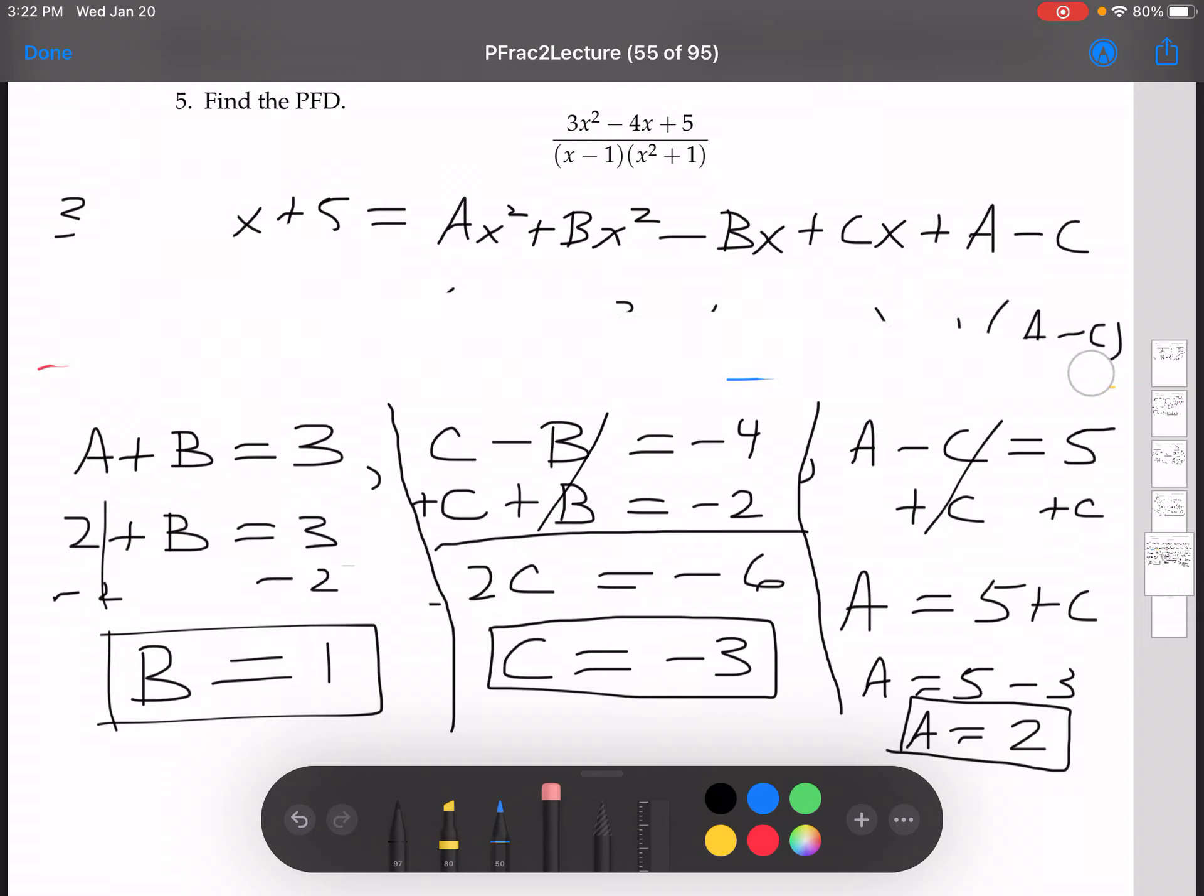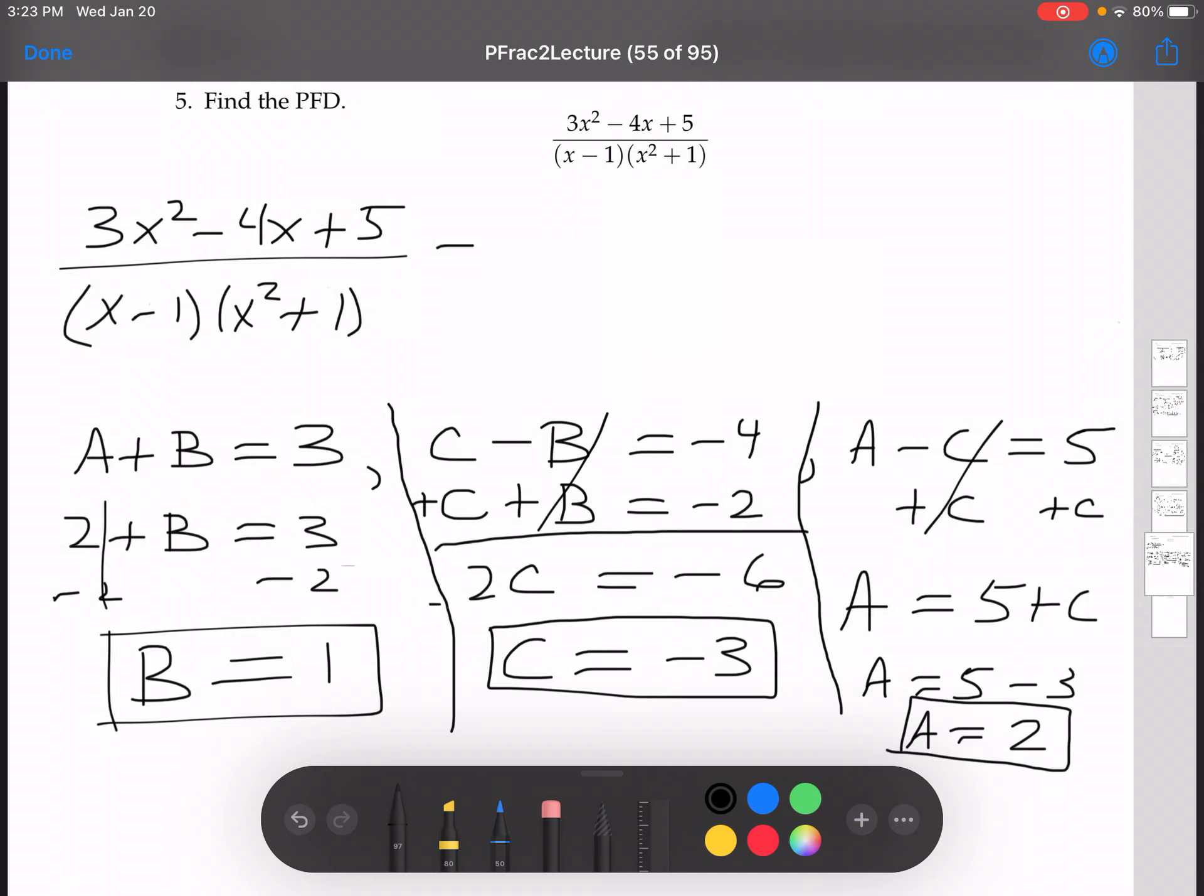And so now I've found that 3x squared minus 4x plus 5 over x minus 1 times x squared plus 1 is equal to 2 over x minus 1 plus x minus 3 over x squared plus 1. And I did check to make sure that it was correct, and it is. I did this math here, and I got exactly this. So we know that is our partial fraction decomposition.